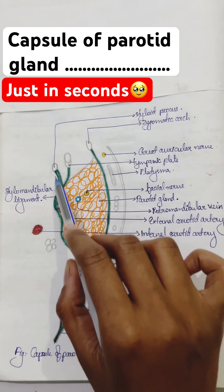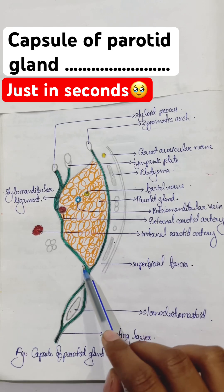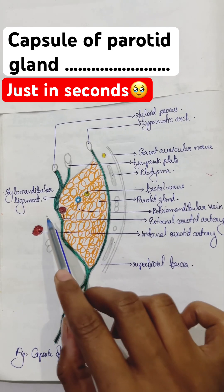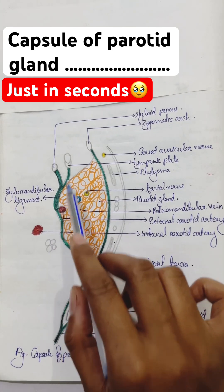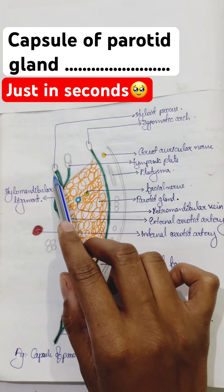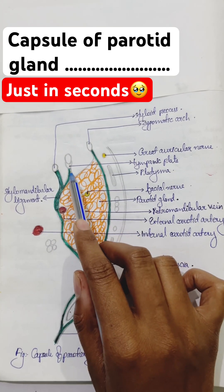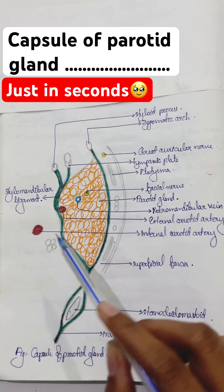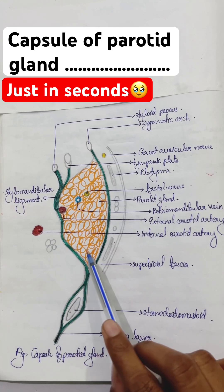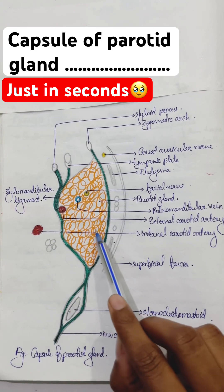The deep lamina or the deep fascia is thin and it is attached above to the styloid process, tympanic plate, angle and posterior border or ramus of the mandible.